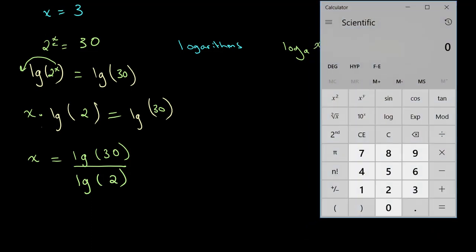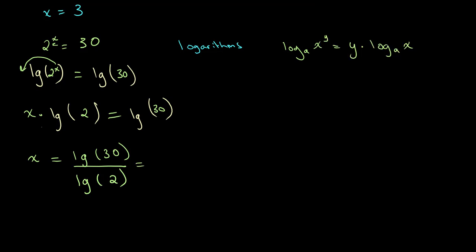So let's say we have lg of 30, so lg of 30, and this divided by lg of 2. So we have our equation up here and this is equal to 4.906906. And we round off to the nearest two decimal places which gives us 4.91. So x is equal to 4.91.